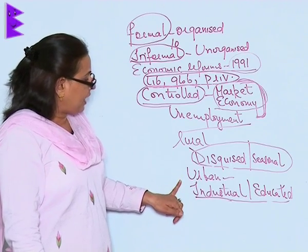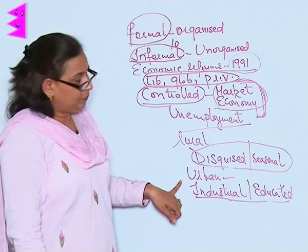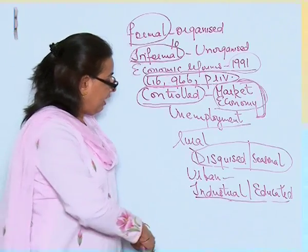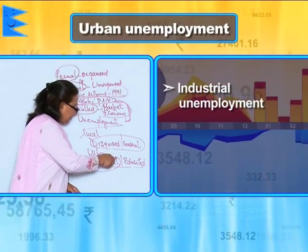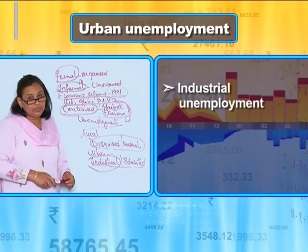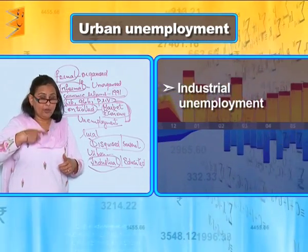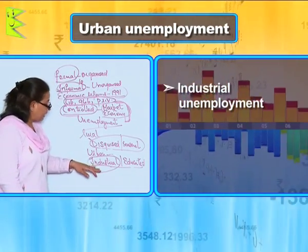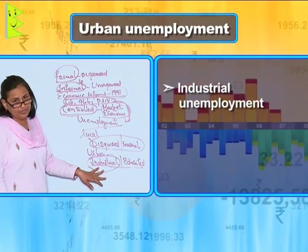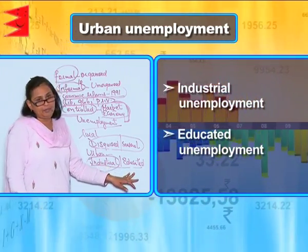Then we talk of urban unemployment. In urban unemployment we have industrial unemployment. Industrial unemployment is slowly rising because of the increase in population. Then we have educated unemployment.